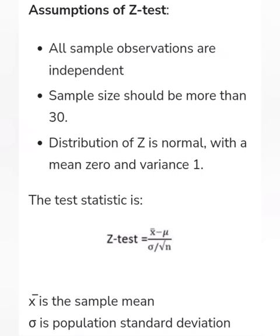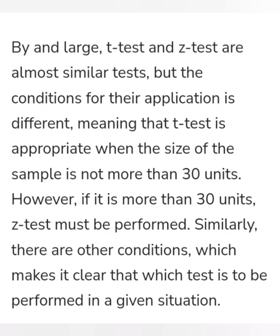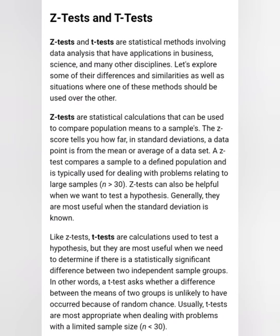The formula is: x-bar minus mu, divided by standard deviation divided by root n. This formula is the same for both. For large sample and small sample, and the test of hypothesis — these two are considered parametric tests. Both are based on variance.